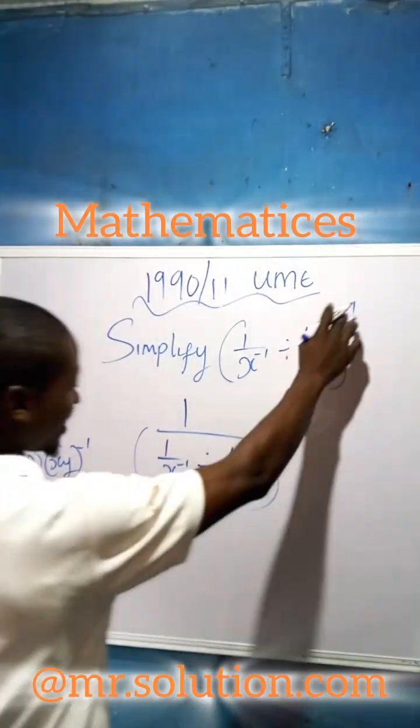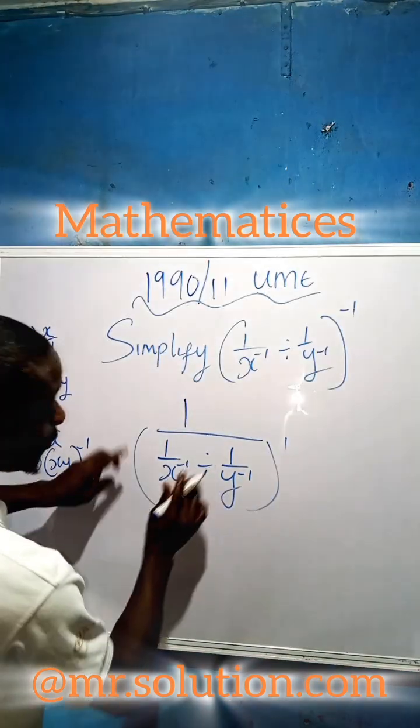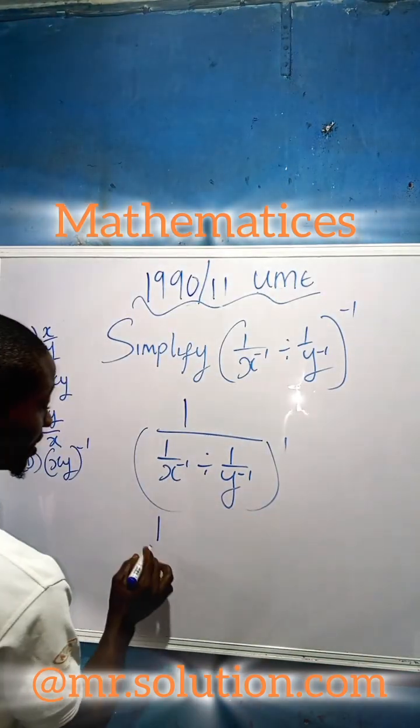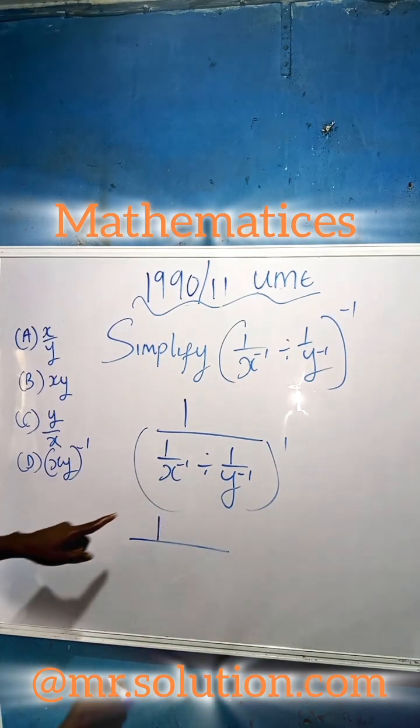So what you are going to do is have one—hope you understand this part. Now, the next thing is one over. You can see here we have a negative exponent.